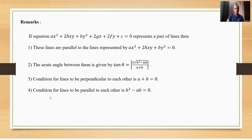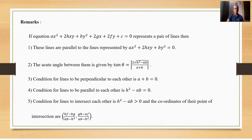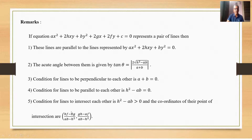The condition for lines to be parallel to each other is h² − ab = 0. The condition for lines to intersect each other is h² − ab > 0. The coordinates of their point of intersection are given by the intersection formula for the general second-degree equation.